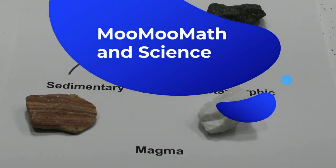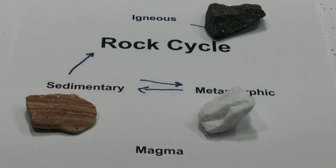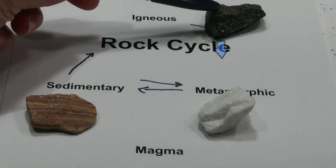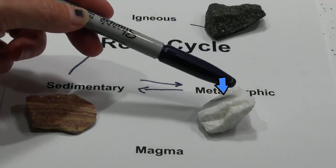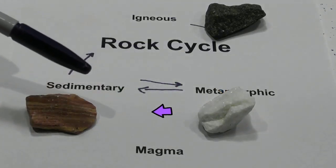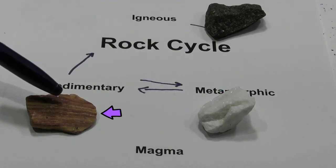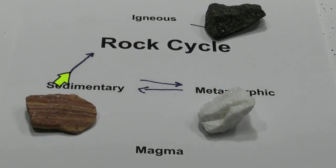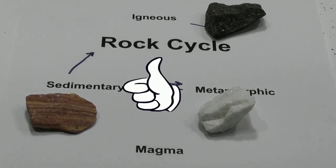This is Moomoo Math and Science and a simple diagram of the rock cycle. The rock cycle basically illustrates how an igneous rock can become a metamorphic rock, or a metamorphic rock can become a sedimentary rock, or a sedimentary rock can become an igneous rock. So I'll break it down step by step so you know what's going on with the rock cycle.